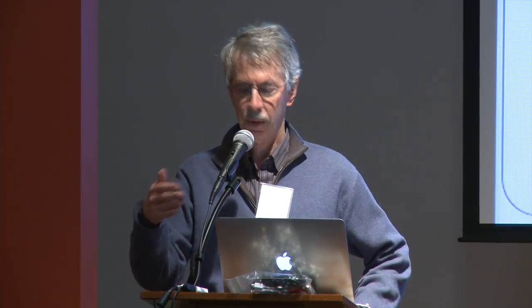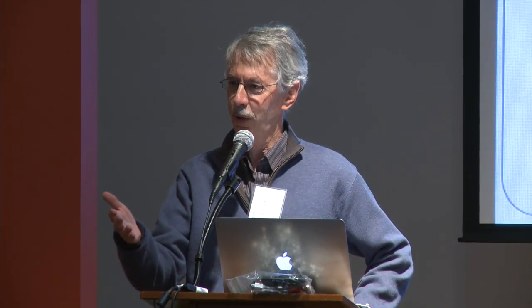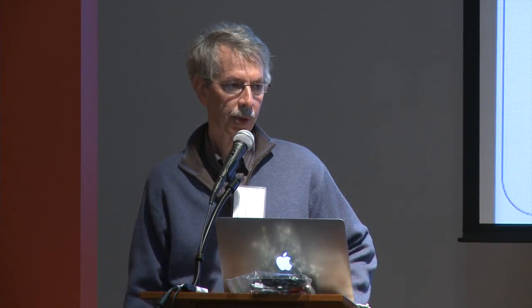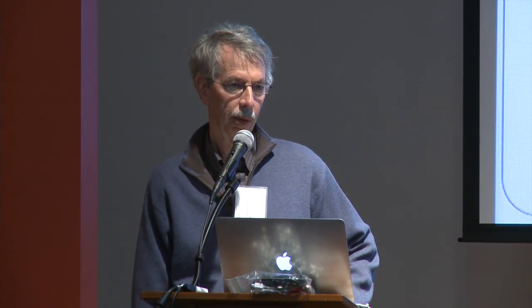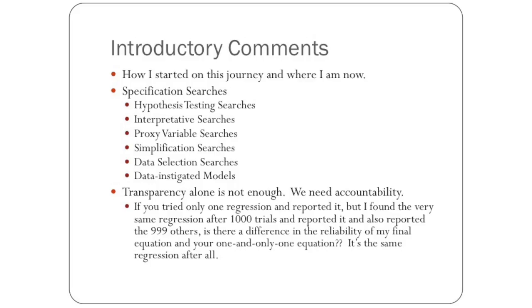I'd like to argue that transparency is not enough. Suppose that you estimate a regression model and you only estimate one and report it fully. I estimate a thousand and end up with the same one that you did, and I report every step along the way, making it apparently transparent. Well, should you and I make the same inferences from the data? How do you as a reader make that call as to whether the process by which the person went through the models has an impact on the inferences you should make? I don't think you should make the same inferences, because you're revealing different attitudes about what generated the data. The first person has no doubt; the second person has a lot of doubt, a lot of statistical uncertainty that comes with that doubt, but also model ambiguity.